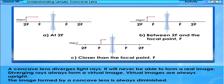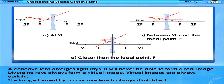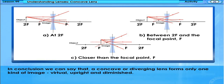A concave lens diverges light rays and will never be able to form a real image. Diverging rays always form a virtual image, and virtual images are always upright. The image formed by a concave lens is always diminished. In conclusion, a concave or diverging lens forms only one kind of image: virtual, upright and diminished.